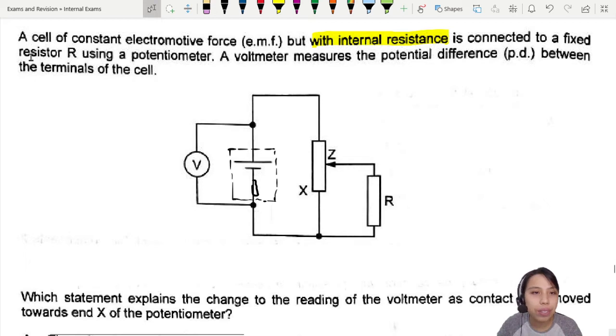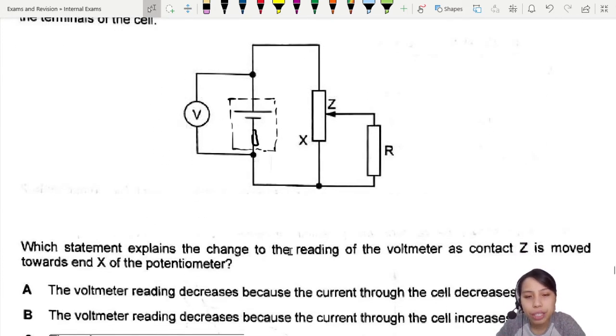Anyway, connected to a fixed resistor using a potentiometer. A voltmeter measures the potential difference between the terminals of the cell. Which statement explains the change to the reading of the voltmeter as contact Z is moved towards end X of the potentiometer?